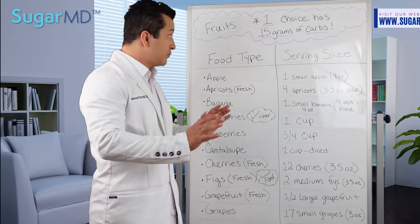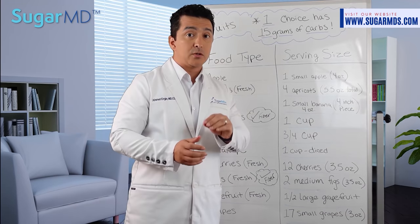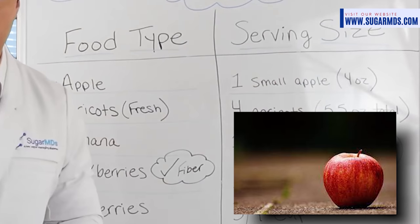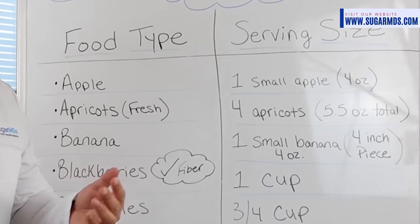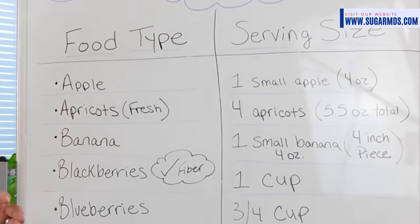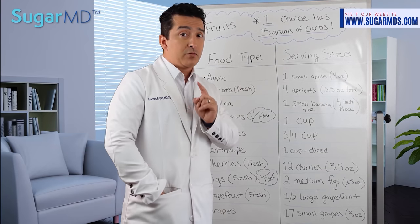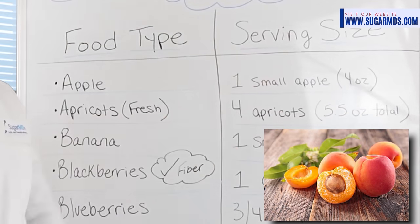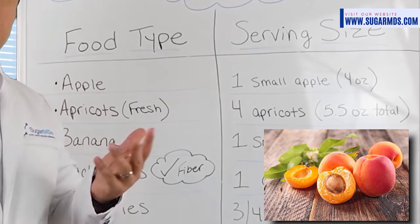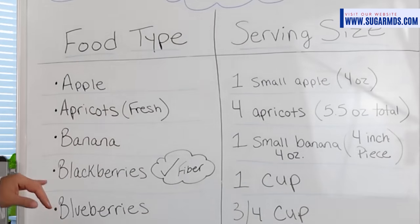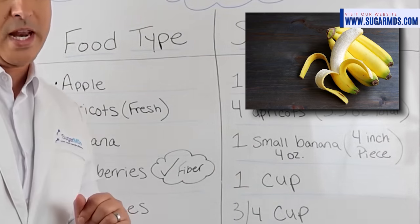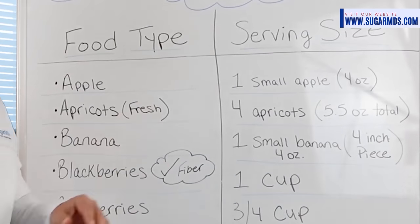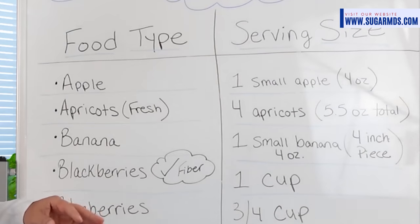Let's talk about fruits. One serving is 15 grams. One small apple is 15 grams, a medium apple is 30 grams, and a large apple is 45 grams — so a huge apple means a lot of carbs. Four to five fresh apricots equal one apple serving, so about 15 grams. For bananas, a very small banana is 15 grams, but most bananas in the United States are around 25 to 30 grams.